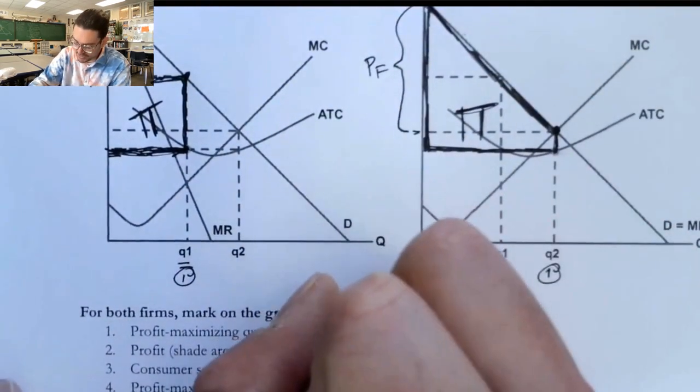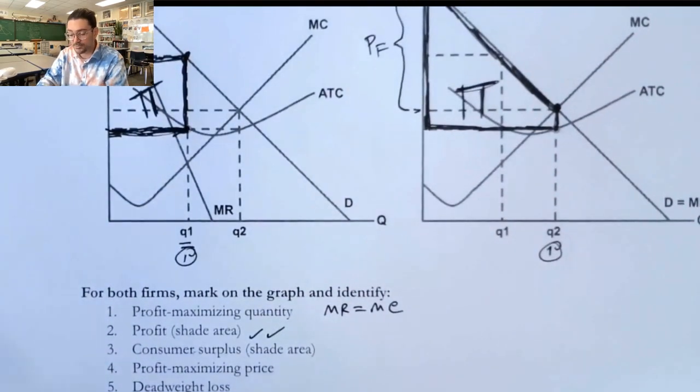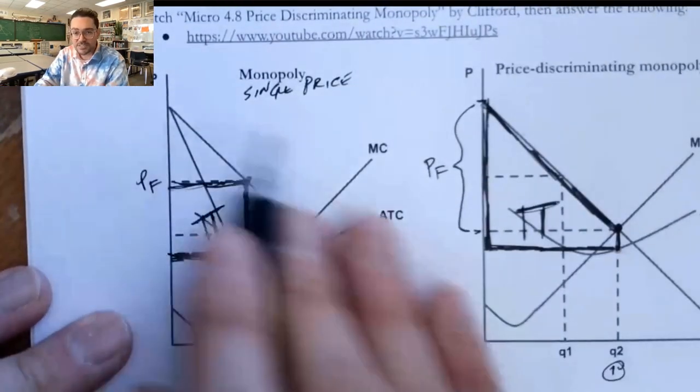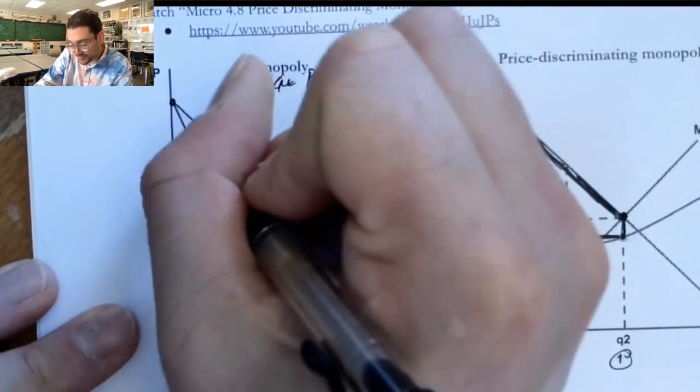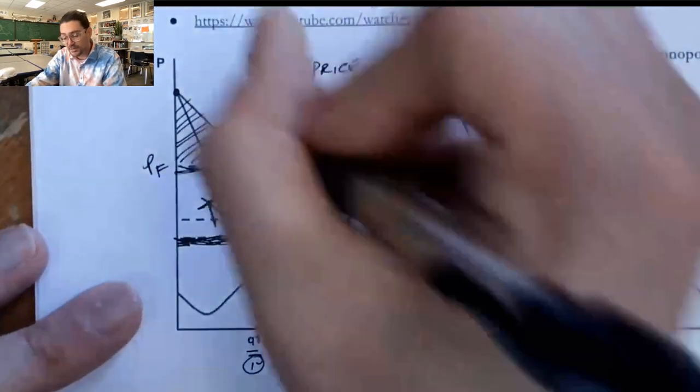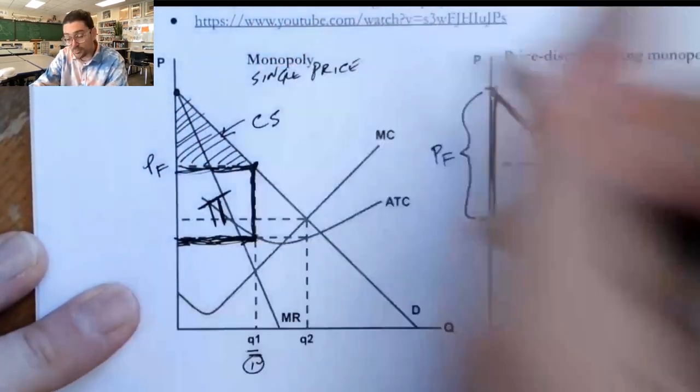So we've done shading the area on both of those. Consumer surplus, shade the area. On this one, we know the consumer surplus goes from the price that the consumers are paying up to the demand curve, because it's the difference between what they were willing to pay and what they did pay.